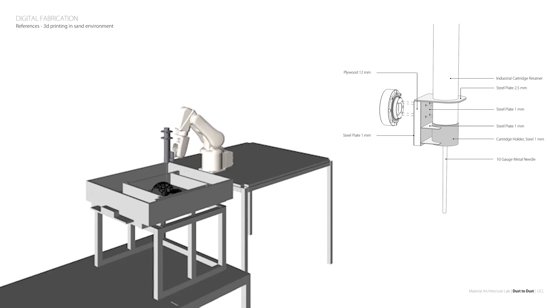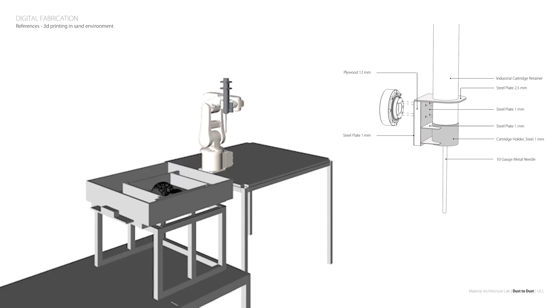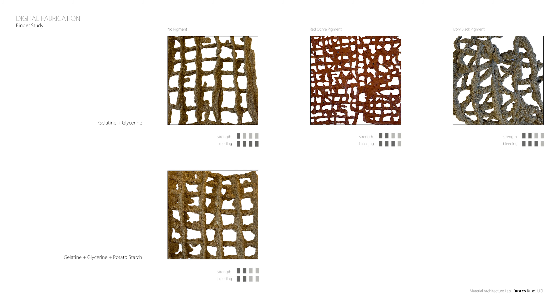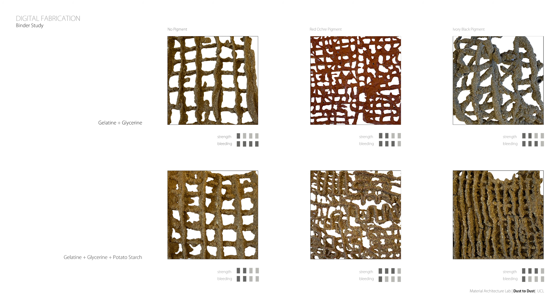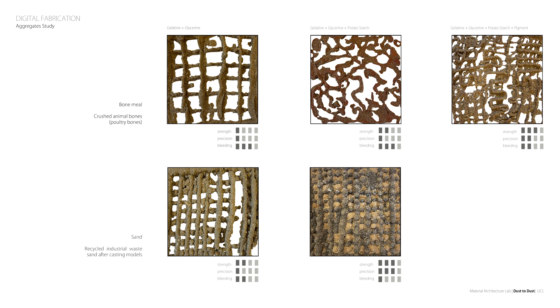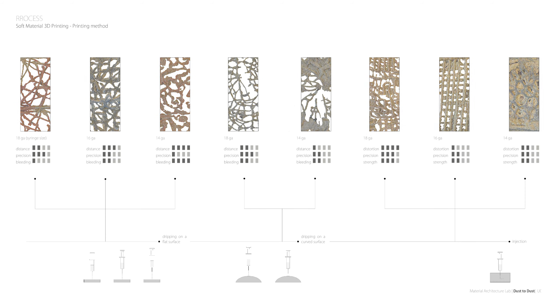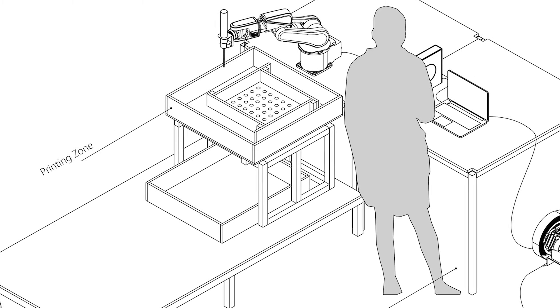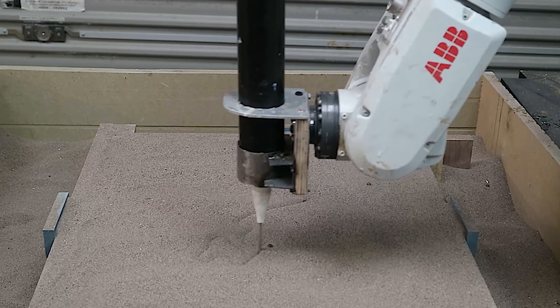3D printing could be a tool to harness this material that changes state so easily, in order to produce complex geometries imaginable in the real-life construction industry. Before the robot arm prints, we did a series of manual tests using a needle tube. The conclusion of the manual test is that potato starch can increase the strength of the gelatin binder. Sand as an aggregate can support the material while printing and can also absorb moisture. High strength models often consist of high density textures. Injection printing will reduce material bleeding. Therefore, we developed a fabrication process based on injecting the gelatin binder into a bed of aggregate.